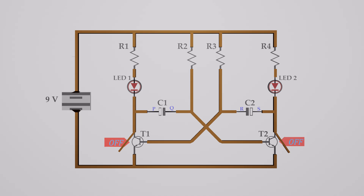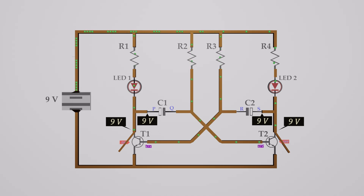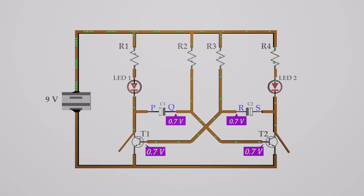At the beginning, neither of the transistors are on. As soon as we apply the supply voltage, the voltage of both collector terminals becomes equal to the supply voltage. Since the positive terminals of the capacitors are connected to the collector terminals of the transistors, both positive sides P and S also get the potential of 9 volts. Both base junctions get 0.7 volts through resistors R2 and R3. Since the negative sides of the capacitors Q and R are connected to the base of each transistor, Q and R get the potential of 0.7 volts. During the turn-on time, voltage of Q and R sides are equal to 0.7 volts, but since the P and S sides are connected to the collectors, the voltage of P and S decreases gradually.